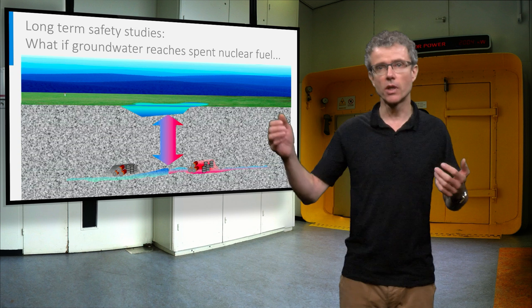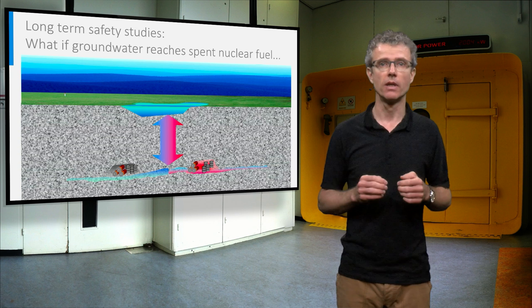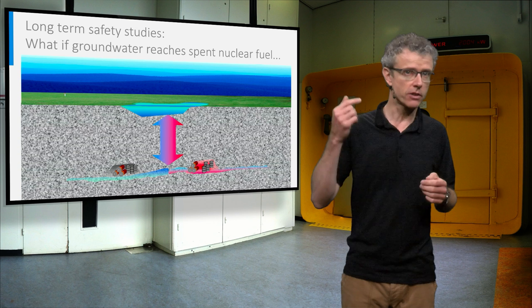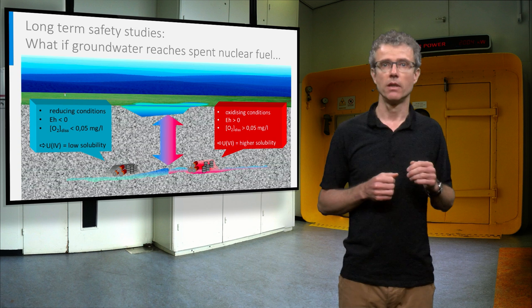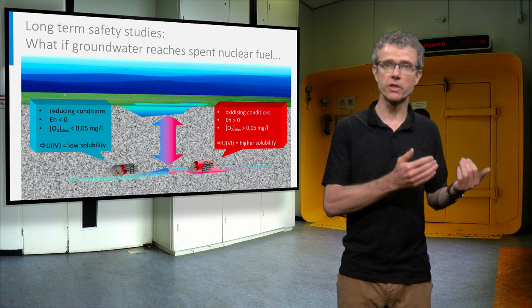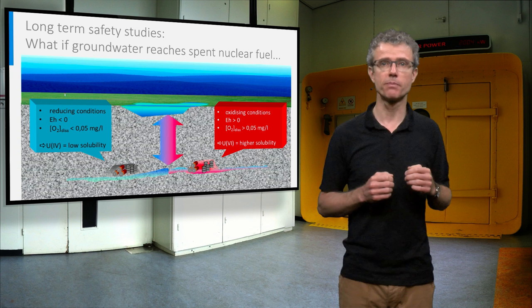Safety studies include the scenario that in the long term groundwater might finally reach the spent nuclear fuel, despite all barriers. For the consequences this might have on the fuel matrix, we have to look back at lecture 4.2. You might remember from that lecture that the solubility of uranium-4 is much lower than the solubility of uranium-6, meaning that reducing conditions and low values for EH and dissolved oxygen in water are favourable for limiting the dissolution of the uranium matrix in spent nuclear fuel.